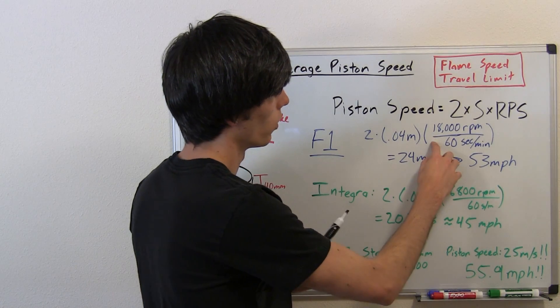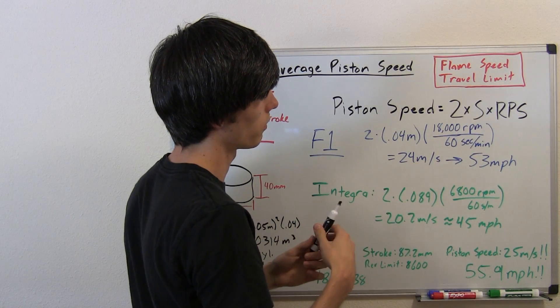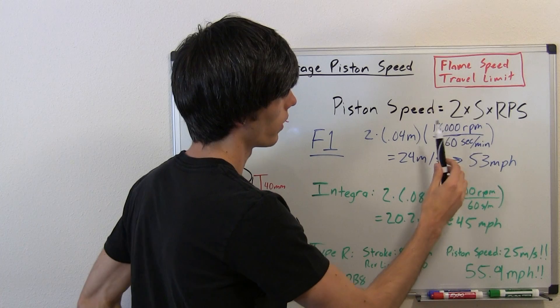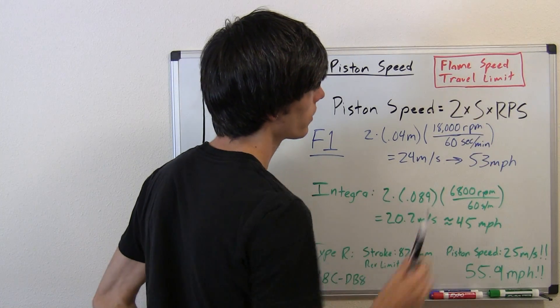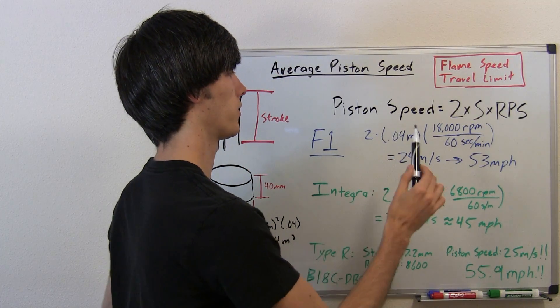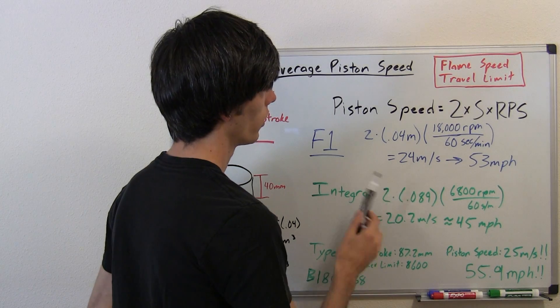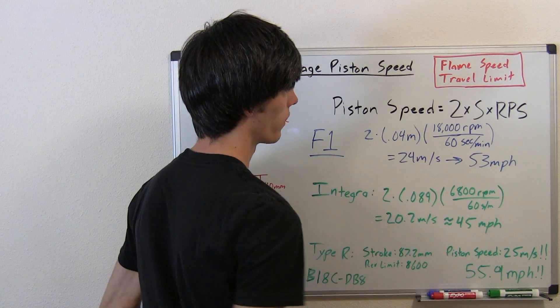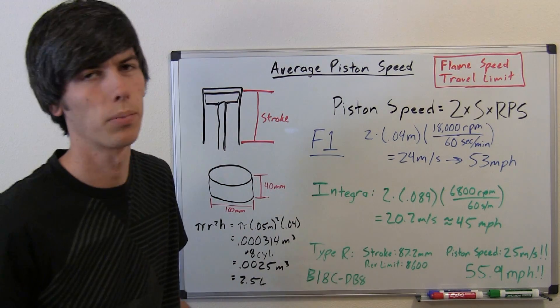and we're just going to do it at redline because that's the most interesting number, and that'll be the maximum. The redline for Formula One being 18,000 revolutions per minute, we want that in seconds, divided by 60 seconds in a minute. So, then you get a number, when you multiply all that out, of 24 meters per second.